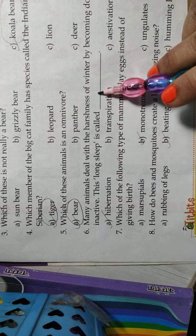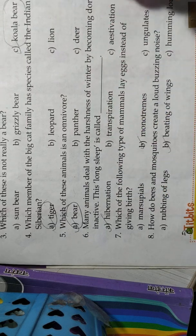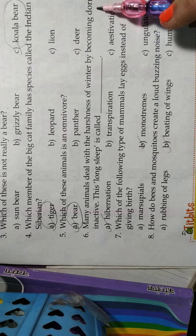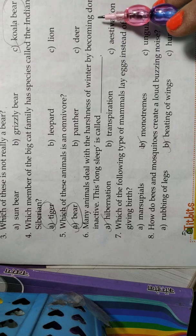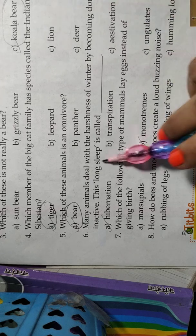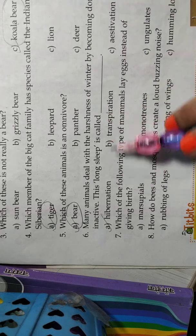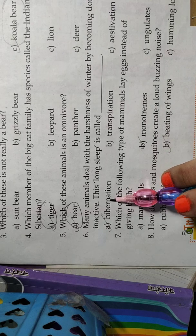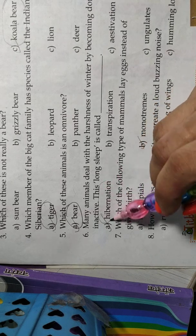Many animals deal with the harshness of winter by becoming dormant or inactive. Dormant means staying in one place and not doing any movement. So in the cold, some animals behave like this. This long sleep is called hibernation, transpiration, estivation. First is the correct one, hibernation. They stay here quietly.